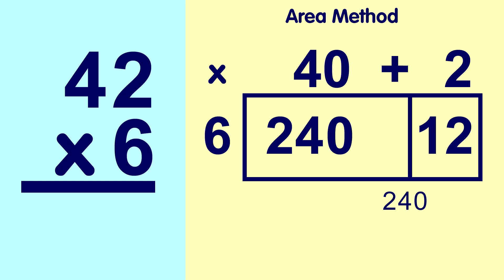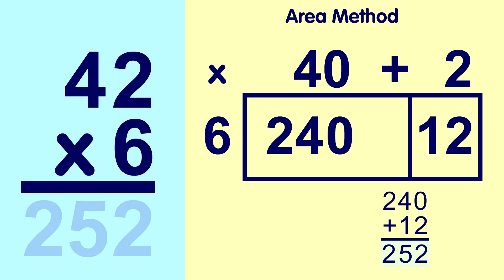240 plus 12. 2 plus 0 gives us 2 in the ones place. 4 plus 1 gives us 5 in the tens place, and this 2 goes in the hundreds place of the answer. 252! That checks out! We got the same answer we did with the good old algorithm method.